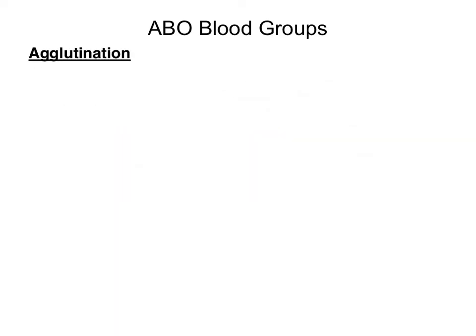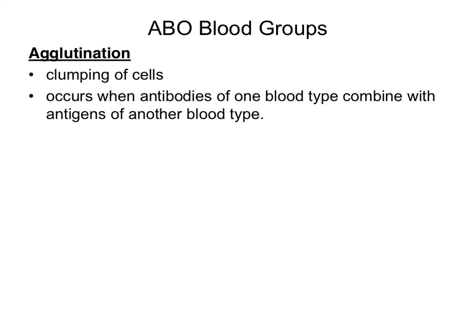The screening of blood during a blood transfusion is important to eliminate the possibility of agglutination. Agglutination is the clumping of cells, which could block the flow of blood through blood vessels. Agglutination occurs when antibodies of one blood type combine with antigens of another blood type. In the next set of slides, we're going to look at two scenarios: one in which agglutination does not occur, and one in which agglutination occurs.